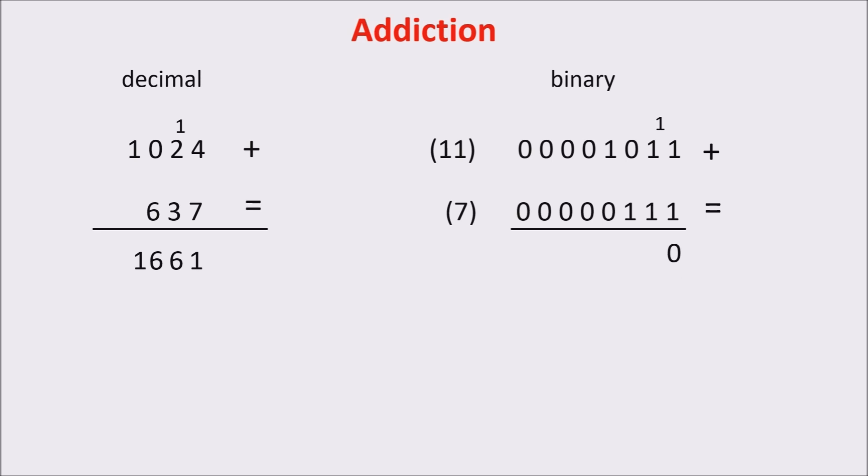Later, we have 1 plus 1 plus 1 because of the carry, and this is equal 3, or 11. So we write 1 and 1 is the carry. Later, we have 0 plus 1 plus carry 1 equals 2, or 10. So we write 0 and carry 1.